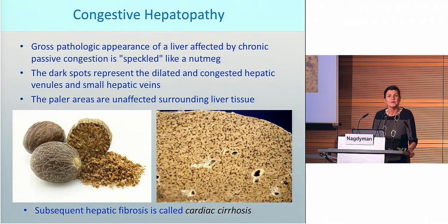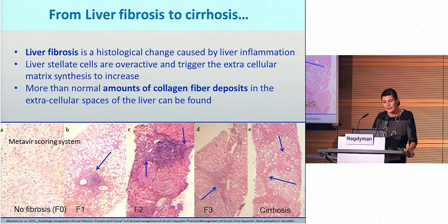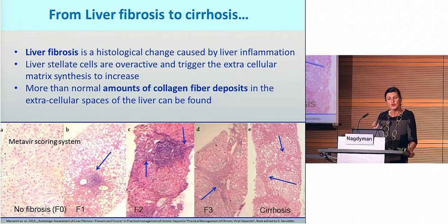Subsequent hepatic fibrosis is called, as we all know, cardiac cirrhosis. When we look at the histological changes, liver fibrosis is a histological change caused by inflammation — I make it simple because we are cardiologists. The liver stellate cells are overactive and trigger the extracellular matrix synthesis to increase.